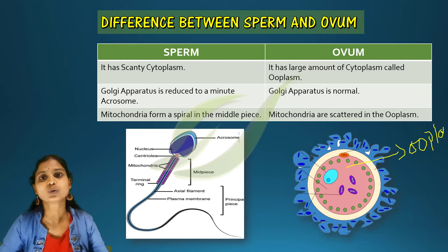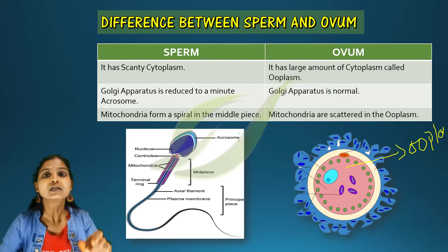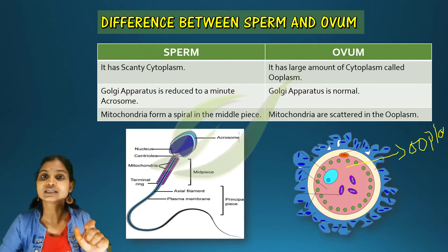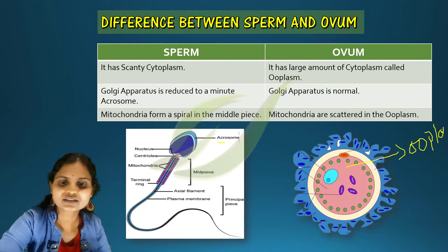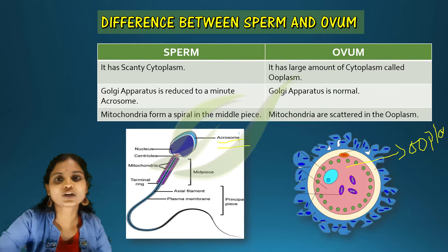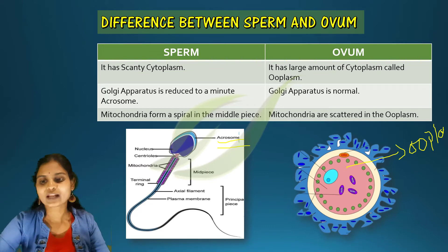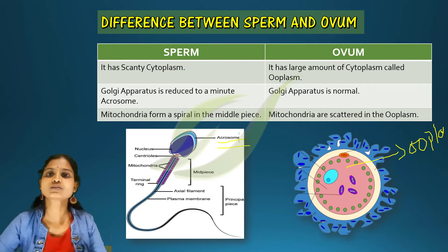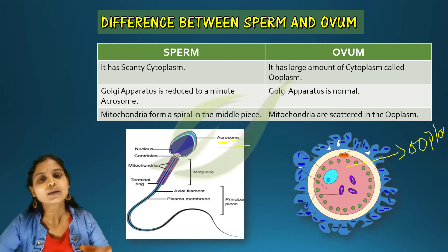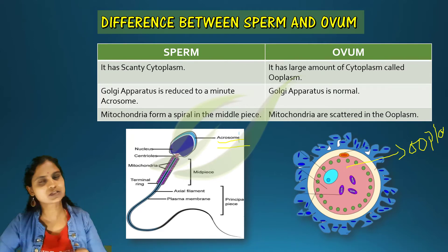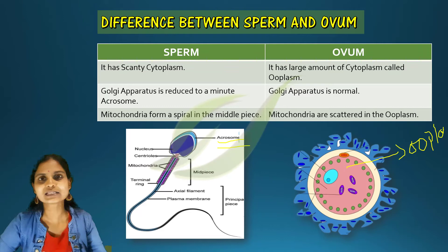In the sperm, the Golgi apparatus has been modified into the acrosome, which is present at the tip of the head and contains enzymes. In the case of ovum, the Golgi apparatus is normally present just as it is in normal cells.